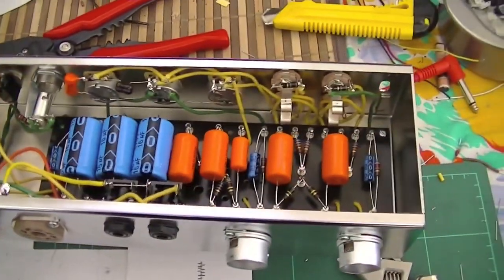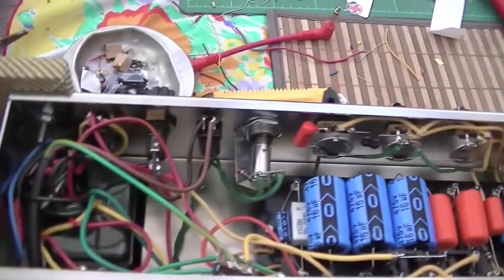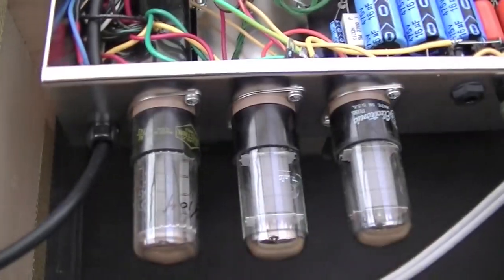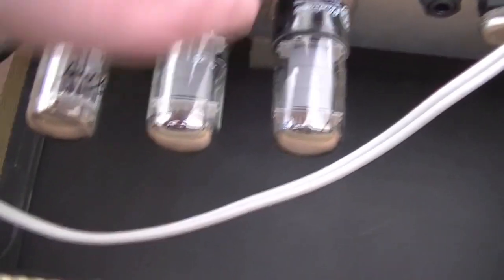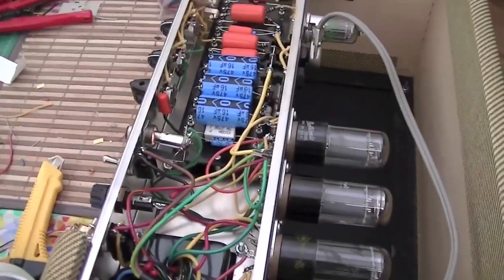There it is finished. A few sanity checks and voltages seem all right minus the valves. Here it is fully decked out: 5Y3 GT, a couple of 6V6 GTs, 12AX7, 12AY7. This is always the part that gets me scared. Here we go, turning it on now.